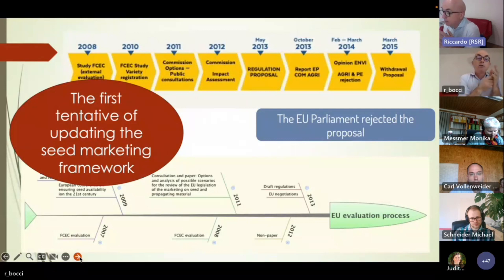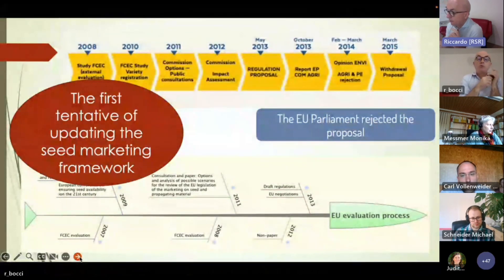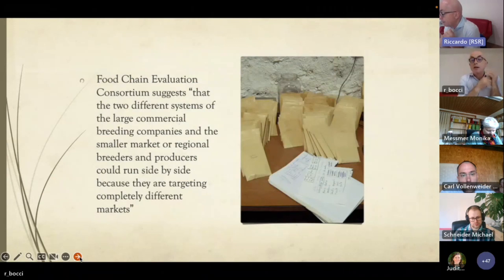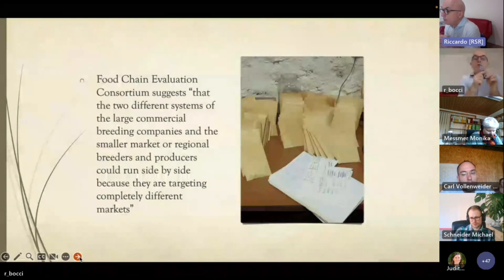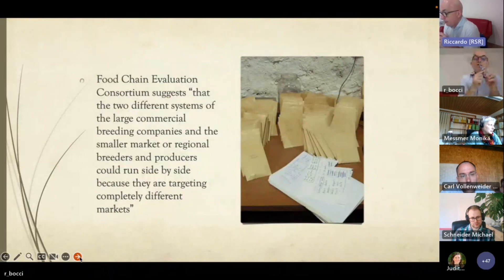Toward the end of the conservation varieties process at the European level, we started to change the entire seed marketing framework in a process called 'Better Regulation,' starting in 2008. We also participated through the SOLIBAM project. It ended in 2015 with the rejection of the proposal by the Parliament. Importantly, during this Better Regulation process, the consortium that prepared the reports for the Commission already suggested — almost 12 years ago — that we could imagine at the European level two different systems: large commercial breeding companies alongside smaller regional breeders and producers running in parallel.